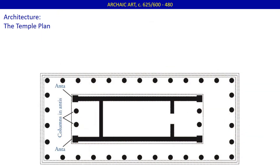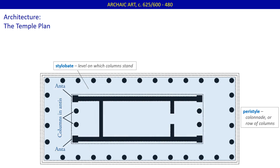You'll also want to keep in mind the basic plan of the temple. The first thing we notice is the peristyle, or colonnade that surrounds the inner structures. The peristyle sits on a flat surface called the stylobate. The stylobate is not at ground level; instead, there is a substructure, or steps, leading up to the stylobate.